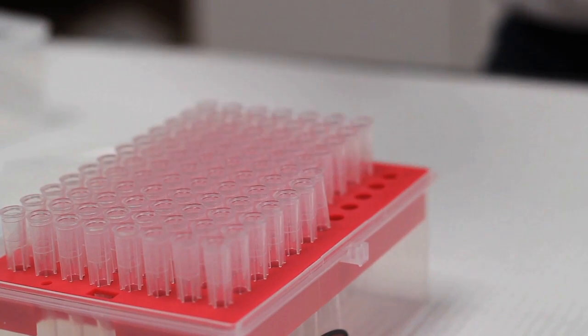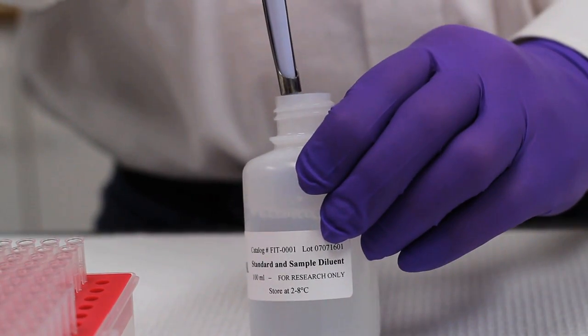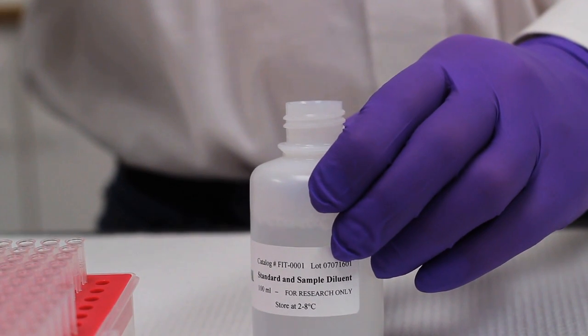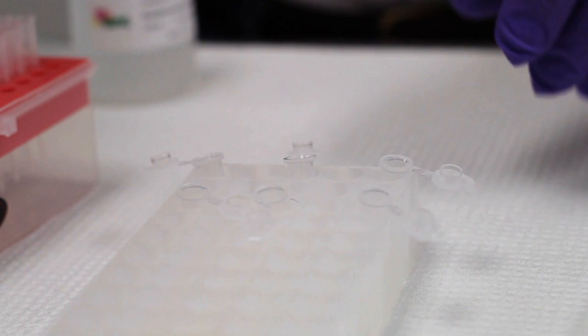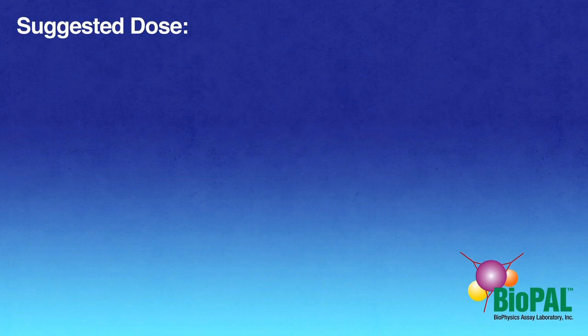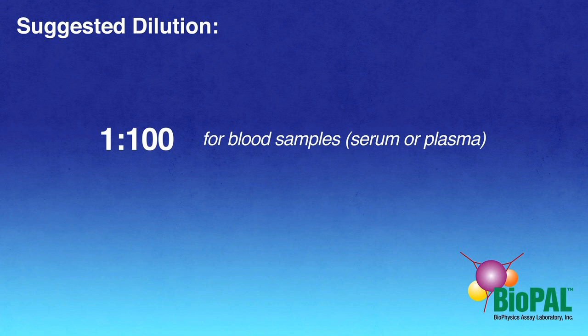One benefit of the immunoassay is that no elaborate sample purification steps are required. However, due to the high concentration of the filtration marker in the samples, each will require dilution with sample diluent prior to analysis. The suggested dose for the measurement of GFR in both kits is 0.1 milliliters per kilogram at a concentration of 10 milligrams of the probe per milliliter. Based upon this dosage, the suggested dilution is 1 to 100 for blood samples, serum, or plasma, and is 1 to 1000 for urine samples.